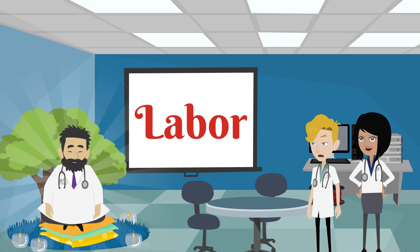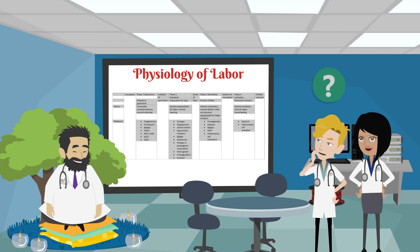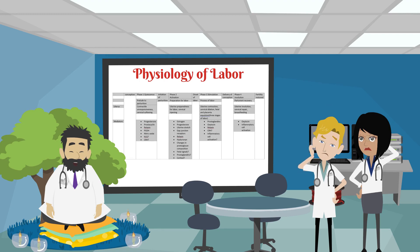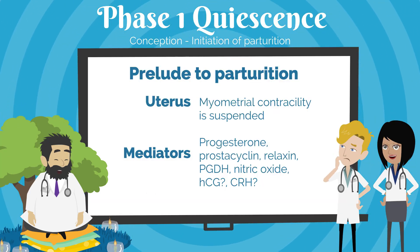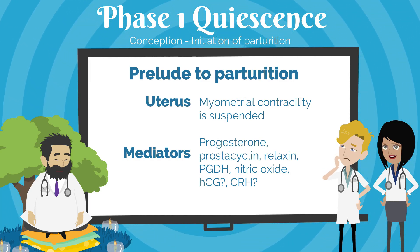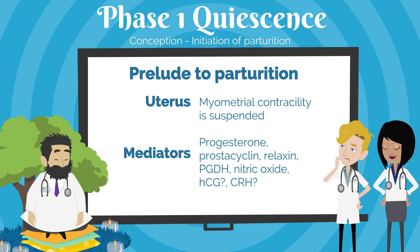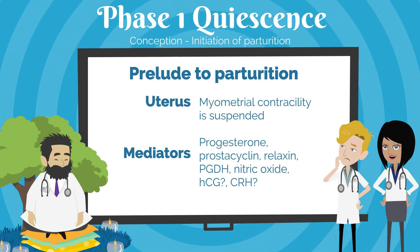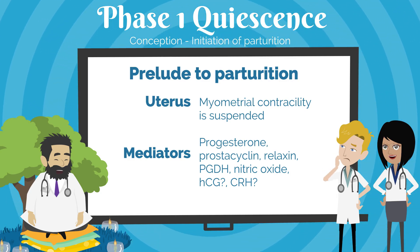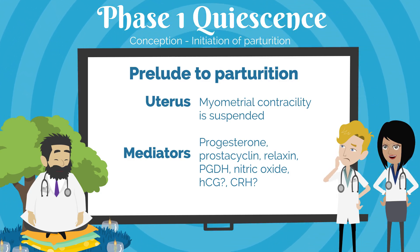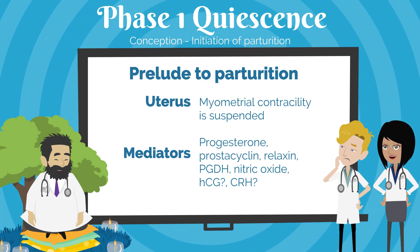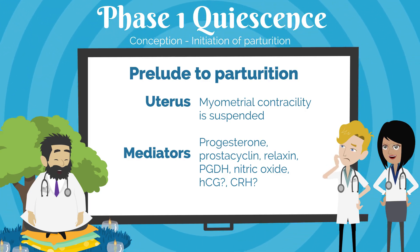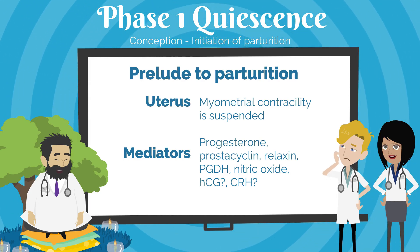Here young doctors, this is labor. Doctor Knows All, I don't understand — maybe a little clarification? I see, let's take it one step at a time, young doctor. The uterine muscle is active throughout the phases of parturition. During phase one, quiescence, the uterine smooth muscle relaxes with maintenance of cervical structural integrity; inherent myometrium contractility is suspended. The uterine muscle is primarily unresponsive to stimuli. This is the prelude to parturition and occurs from conception to the initiation of parturition.